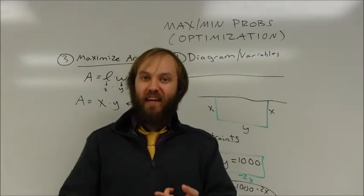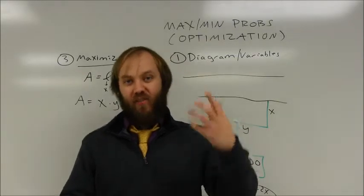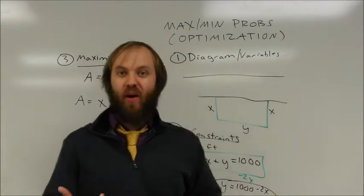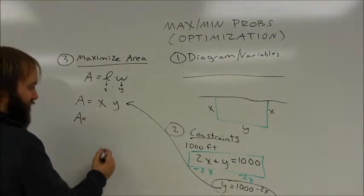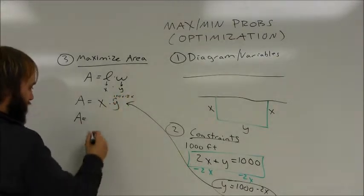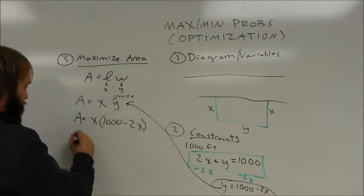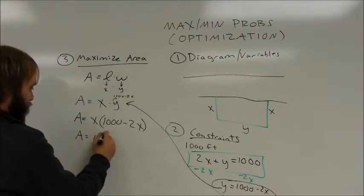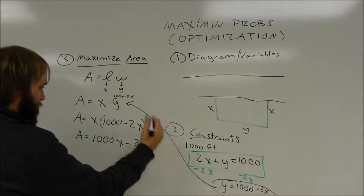They very often get used to take a two variable equation and write it in terms of one variable which allows us to graph it and maybe do quadratic applications or that sort of thing. So the area in terms of x, I'm going to be replacing this with 1,000 minus 2x. It's going to be x times 1,000 minus 2x, area is equal to 1,000x minus 2x squared.